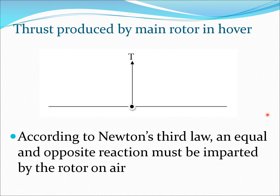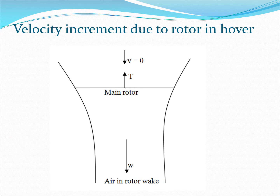According to Newton's third law, this thrust is being generated by the rotor, but there must be an equal and opposite reaction which will be imparted by the rotor to the air. Now we see the basic diagram where the main rotor is generating thrust. Far on top of the rotor there is a velocity of 0, and then as this air goes through the rotor there is a small increase in velocity — we will call it small v — and further down, much further down in the rotor wake, the velocity has become w. This is the basic flow of air through the rotor in the hover condition as used in momentum theory.